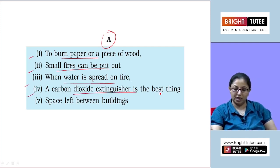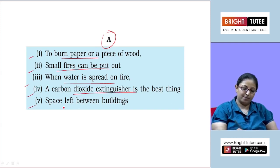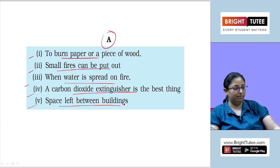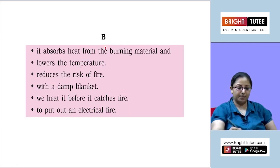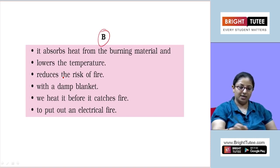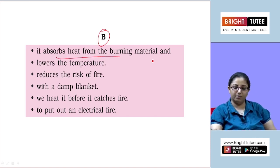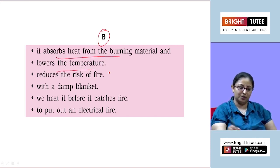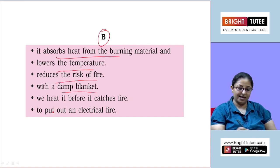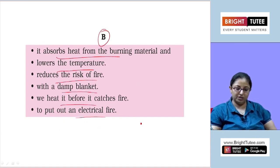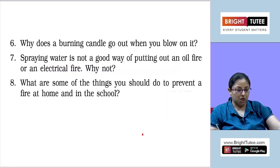Box B options: it absorbs heat from burning material and lowers the temperature; reduces the risk of fire; with a damp blanket; we heat it before it catches fire; to put out an electrical fire.